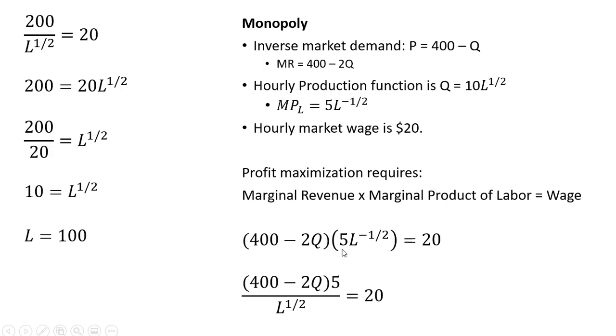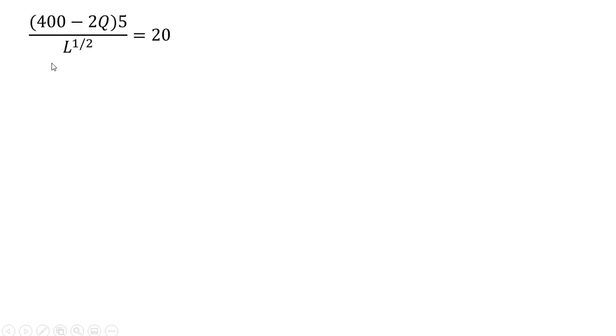I'm going to get the following here. I just move to this L to the minus 1 half back down into the denominator like we did earlier for the perfectly competitive firm. Just rewriting that last step. And now cross multiplying through by L to the 1 half power. Simplifying the left hand side. 400 times 5 and minus 2Q times 5.